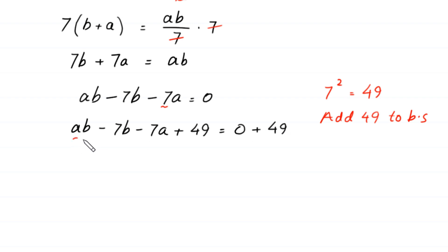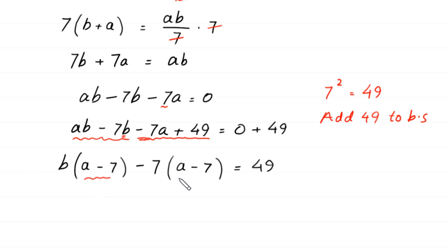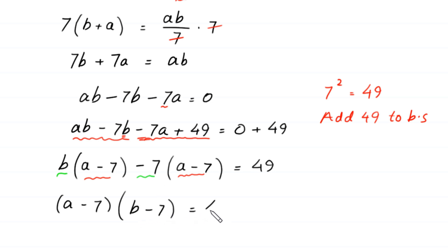From the terms ab minus 7b, we can factor out b, giving b times (a minus 7). From the terms negative 7a plus 49, we can factor out negative 7, giving negative 7 times (a minus 7). Since (a minus 7) is a common factor, we factor it out: (a minus 7)(b minus 7) is equal to 49.